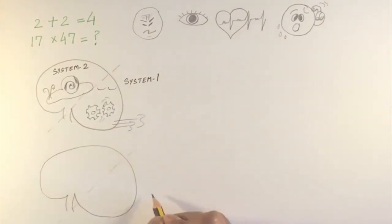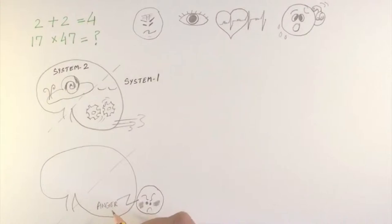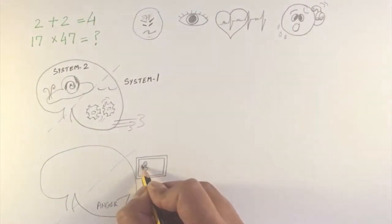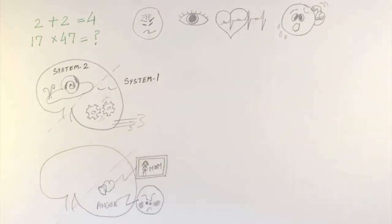System 1 is at work when you see an angry face. You don't have to think too hard to figure out that a person is angry. Or if you see a photograph of your loved one, the instinctive reaction you have—affection or caring—is all instantly processed in System 1.